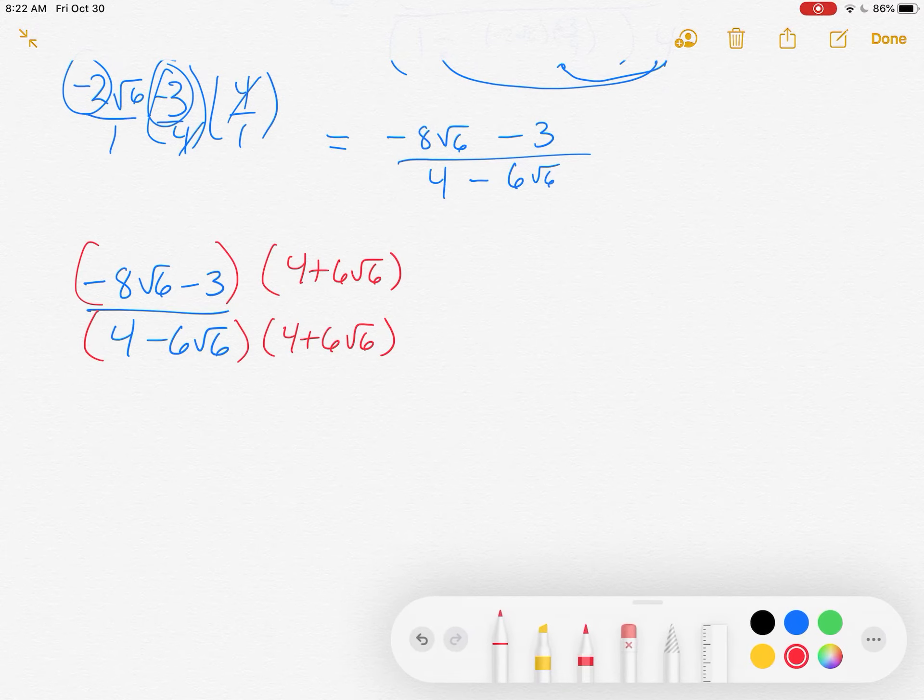On the bottom we know what we get. 4 times 4 is 16, minus, always minus, 6 times 6 is 36. Root 6 times root 6 is 6. So we have that big number on the bottom.